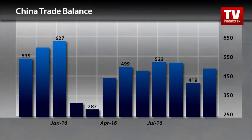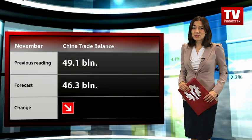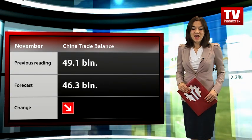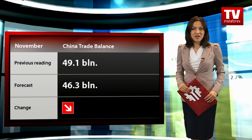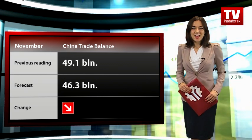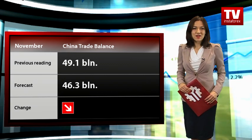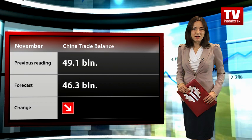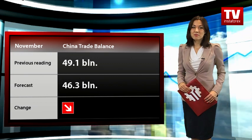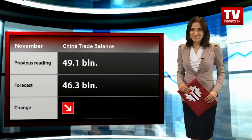Still, the result missed forecasts for an increase to 51.7 billion dollars. Meanwhile, exports dropped by 7.3% and imports fell by 1.4% in annual terms. As a result, the trade surplus narrowed by 12.2 billion dollars compared with the previous year.